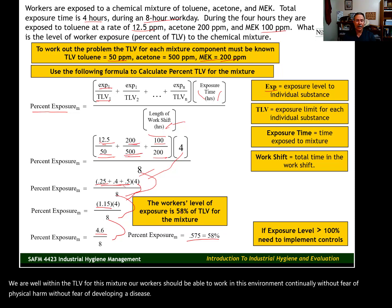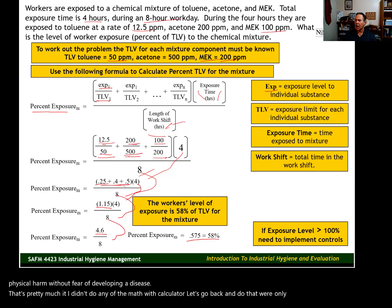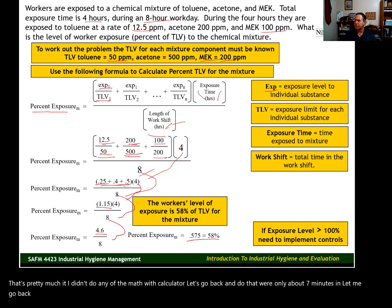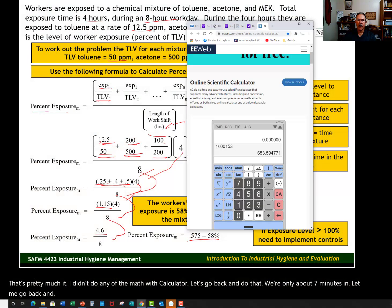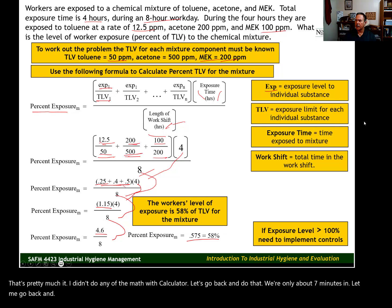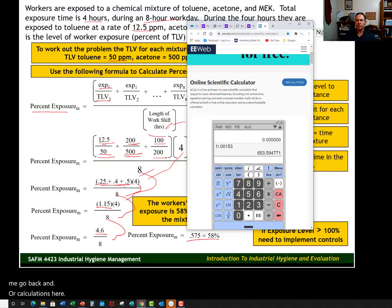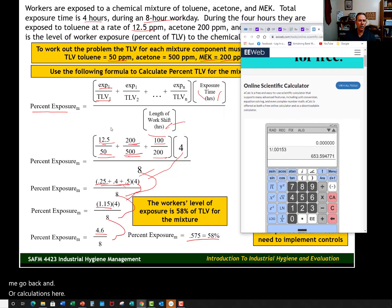That's pretty much it. I didn't do any of the math with the calculator, so let's go back and do that. We're only about seven minutes in. Let me go back and verify our calculations. Our first calculation—our first mathematical operation—was 12.5 divided by 50.